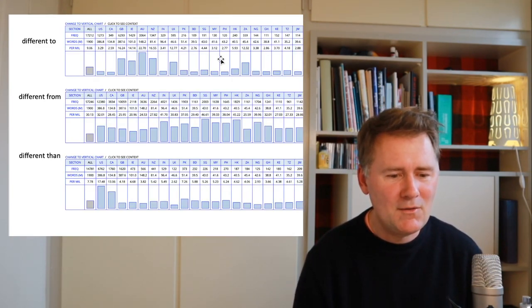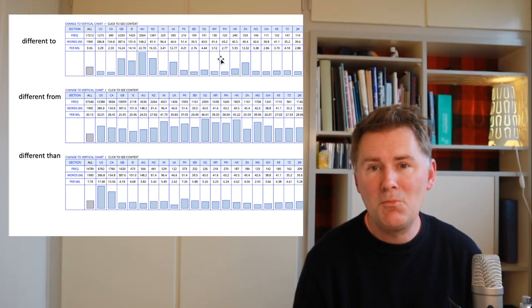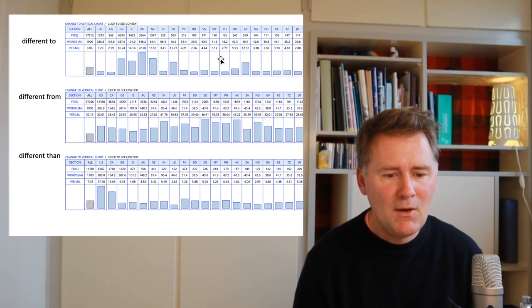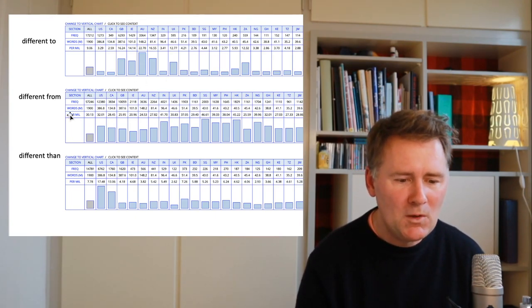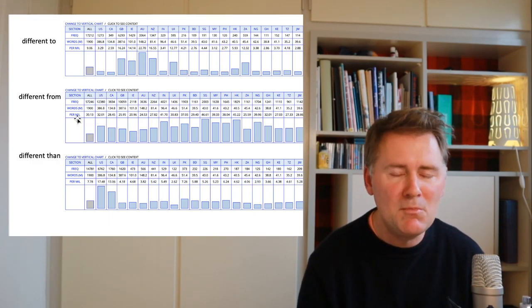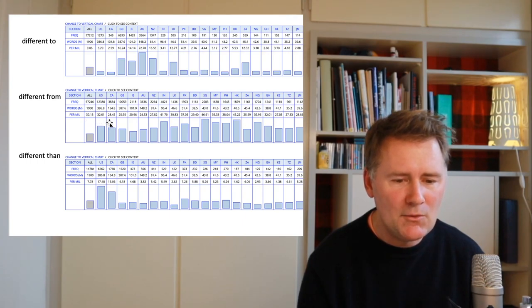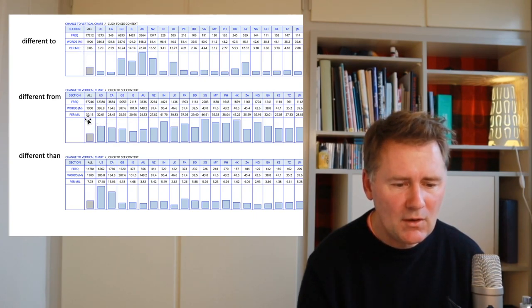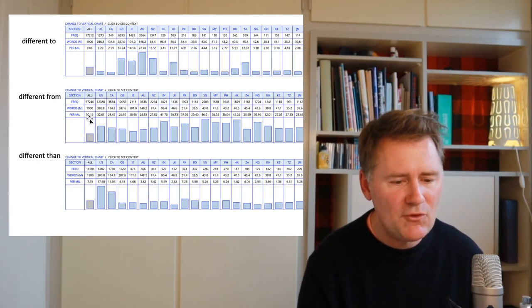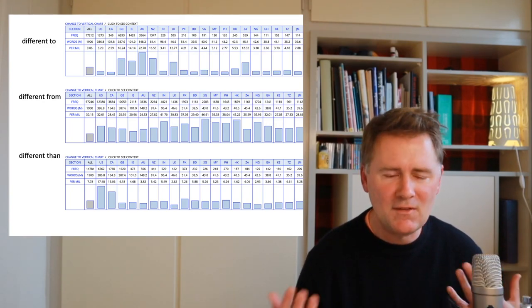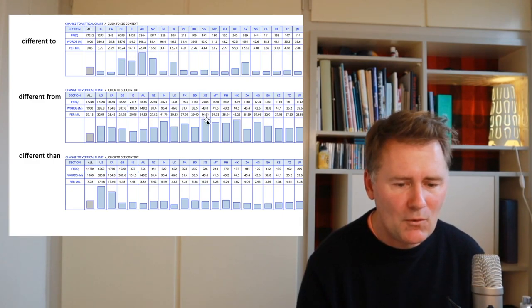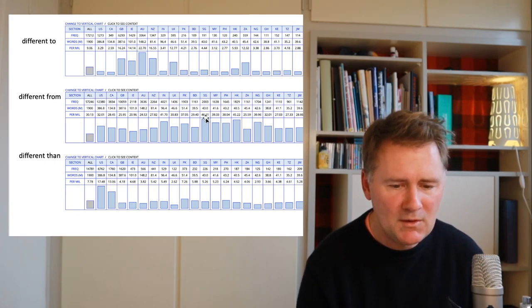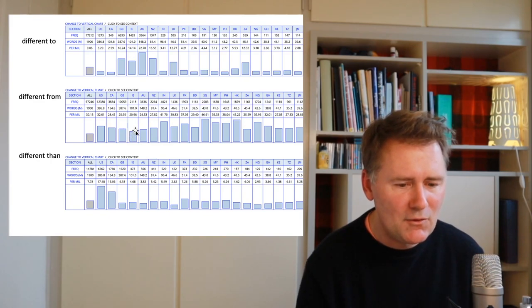Let's first look at 'different from,' which is something of the consensus. When looking at the normalized per-million frequencies, those are actually the highest — on average around 30 instances per million. The varieties sort of pattern together. Singapore has 46.6 per million; Ireland has about 20.96 per million. 'Different from' is the most widely shared form.